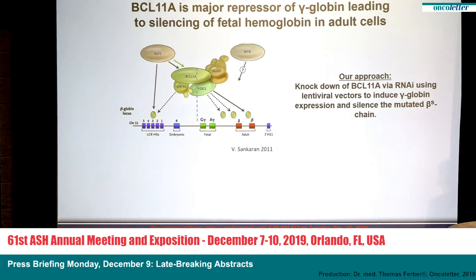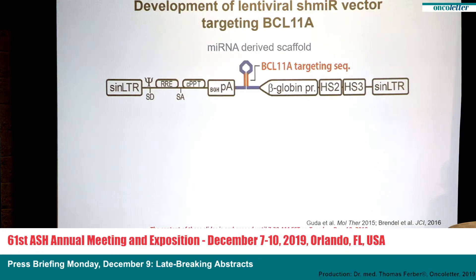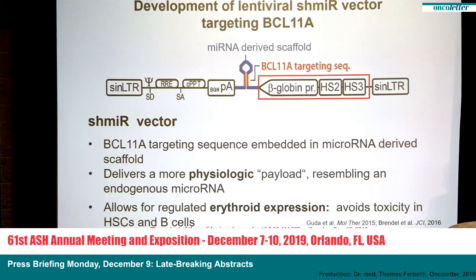but simultaneously silences the mutated sickle globin. The advantage of this over other approaches is that the defective sickling beta globin is down-regulated at the same time that the fetal hemoglobin is induced, and the ratio of alpha to beta globin chains remains balanced. The vector that we developed is called the shmiR vector, where we've used the BCL11A targeting sequence embedded in an endogenous microRNA-derived scaffolding. This delivers a more physiologic payload that resembles an endogenous microRNA, and allows us to express it only in developing red cells, which avoids any toxicity in the stem cell compartment or in B cells, where BCL11A is an essential transcription factor.